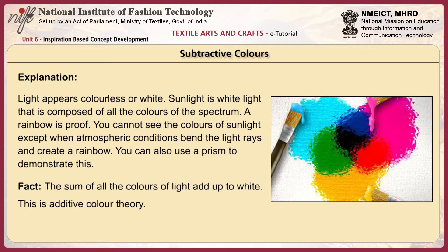Light appears colorless or white. Sunlight is white light composed of all the colors of the spectrum — a rainbow is proof. You cannot see the colors of sunlight except when atmospheric conditions bend the light rays and create a rainbow. You can also use a prism to demonstrate this.